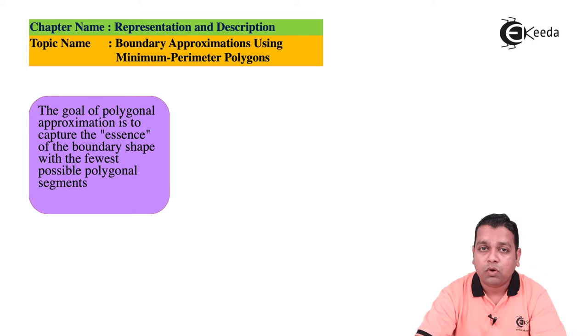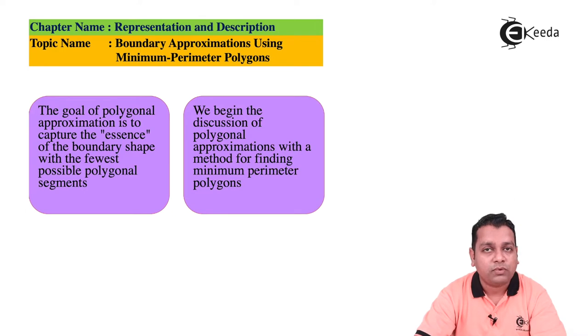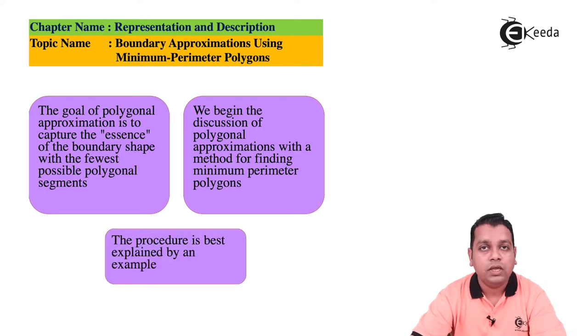The goal of polygonal approximation is to capture the essence of the boundary shape with the fewest possible polygonal segments, so we can regenerate it later. We begin our discussion with a method for finding the minimum perimeter polygon.